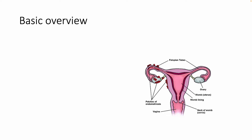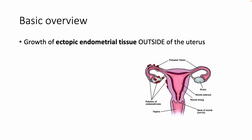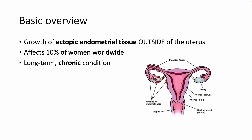Endometriosis can be defined as a growth of ectopic endometrial tissue outside of the uterus. It affects roughly 10% of women worldwide and it is a long-term chronic condition. On this diagram here, you can see patches of endometriosis on the fallopian tubes, on the ovaries and on the outside of the uterus.